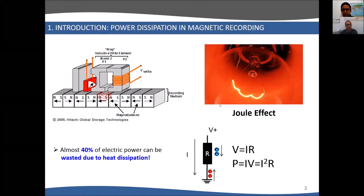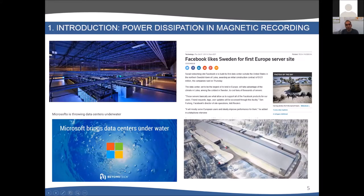You all know that in order to write magnetic information in hard disks, we use miniaturized electromagnets in which current flows in wires. Depending on the direction of the current, you can write either positive or negative magnetic domains. Because of this current that flows in these wires, we have the Joule heating effect. Almost 40% of the electric power that reaches the computer is wasted, dissipated in the form of heat. This is because the Joule effect is proportional to the square of the intensity.